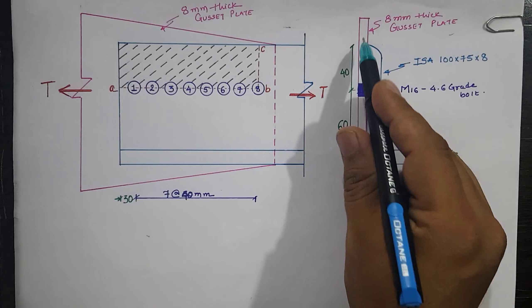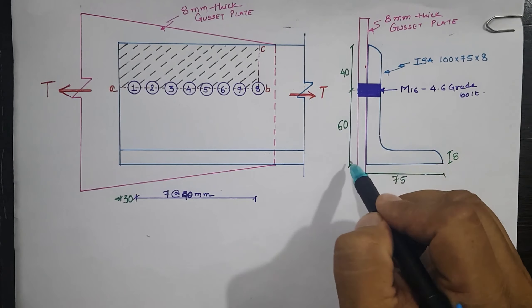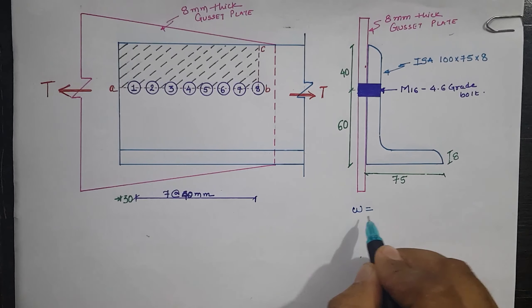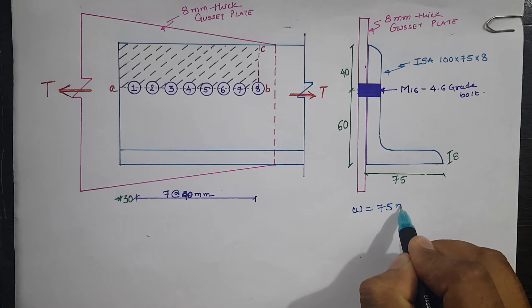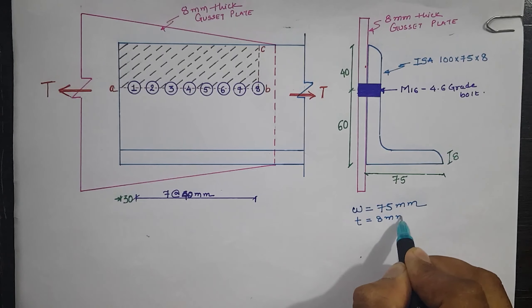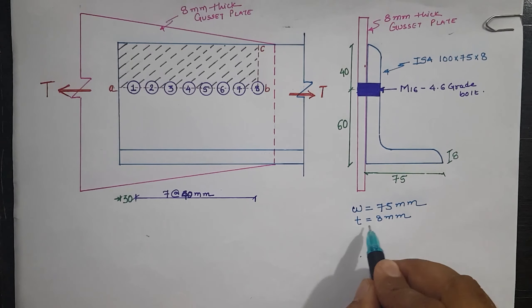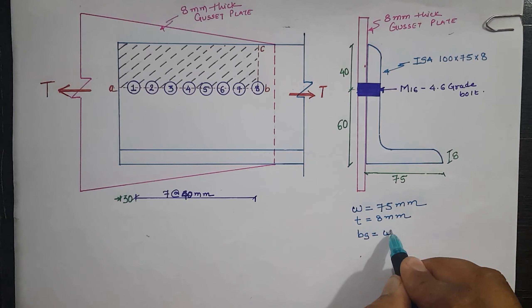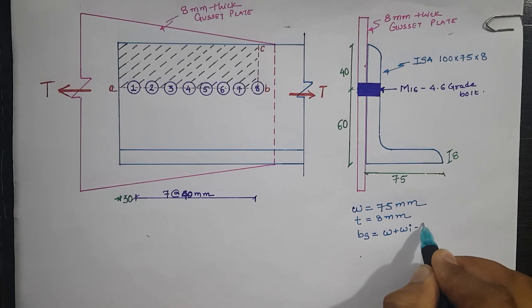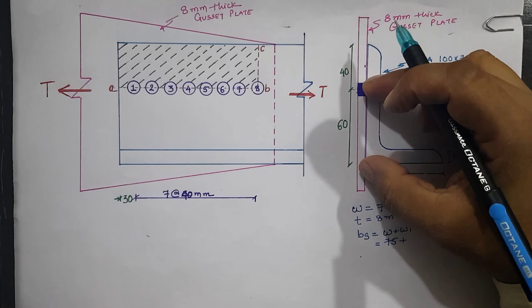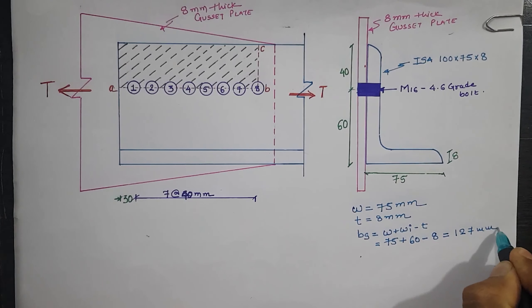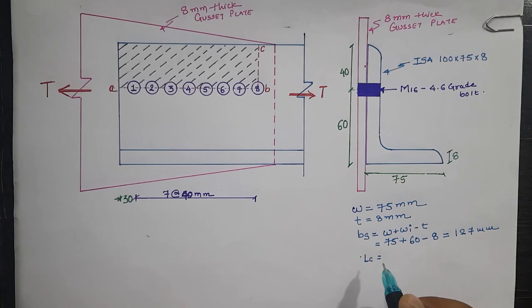The bolt is provided at 60 mm from the bottom, and 40 mm is the raised part. For the rupture calculation, we need the value w, which is the outstanding leg length. The leg not connected is 75 mm, so w = 75 mm. The thickness t = 8 mm from ISA 100×75×8. Next, bs is the shear lag width: bs = w + wi − t = 75 + 60 − 8 = 127 mm. The length of connection Lc is the distance between the first and last bolt.